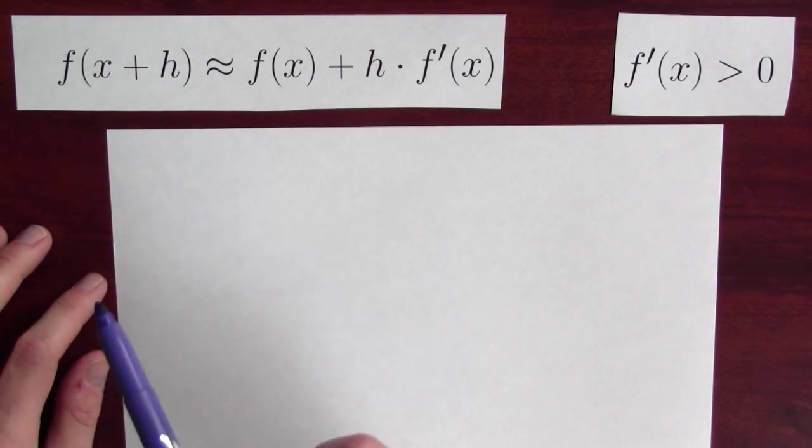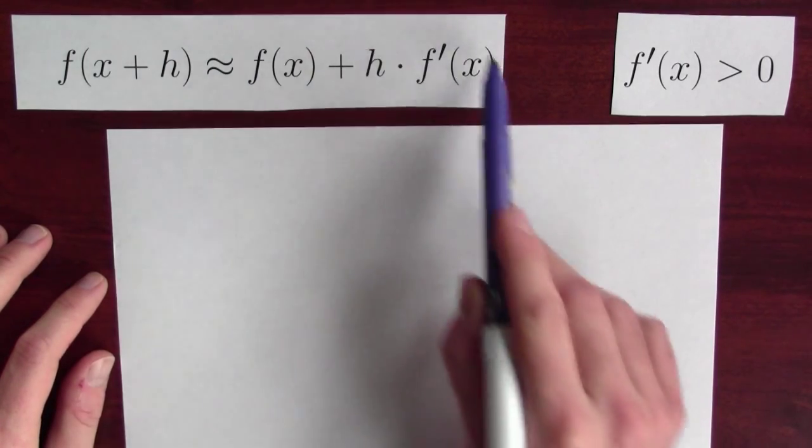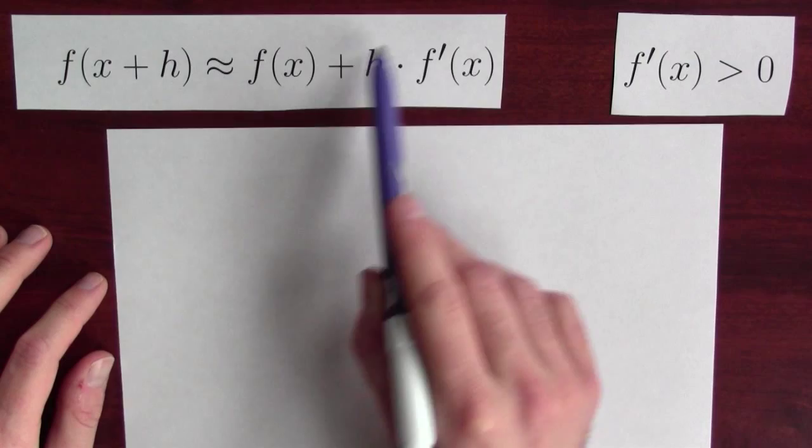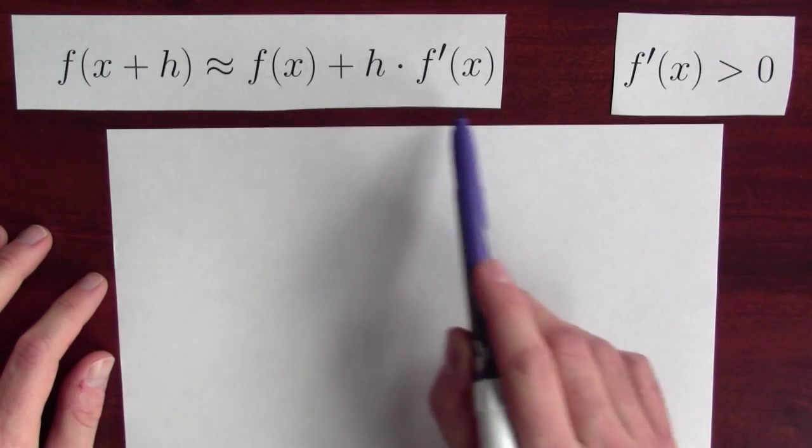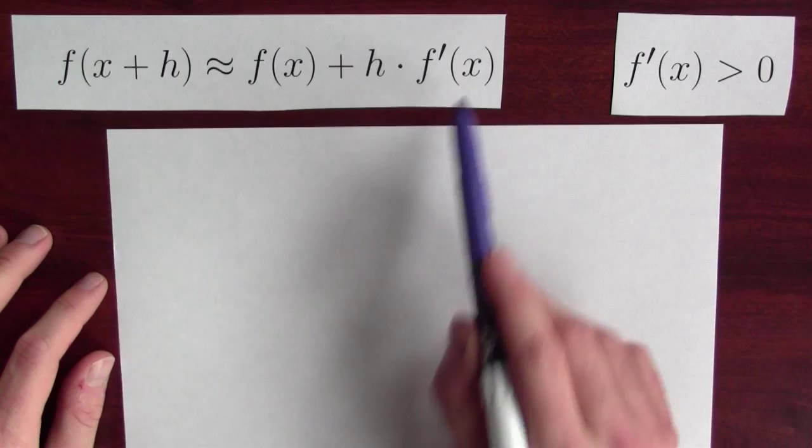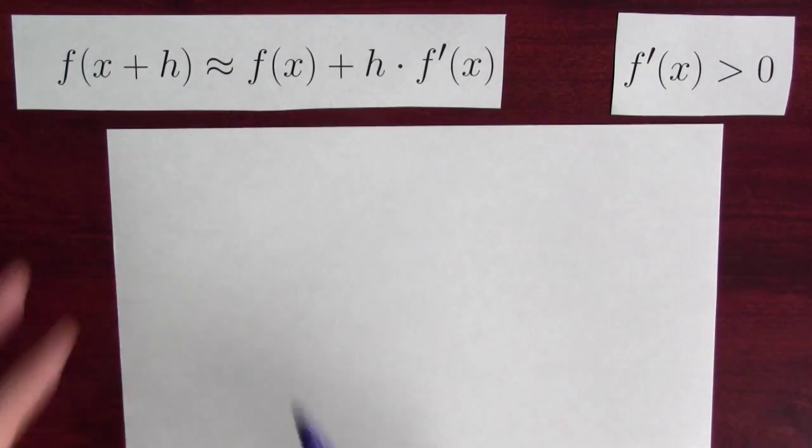The function's output at x plus h is close to the function's output at x plus how much the derivative tells us the output should change by, which is how much the input changed by, times the ratio of output change to input change.